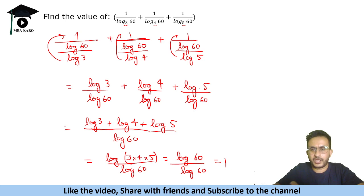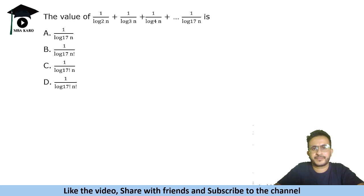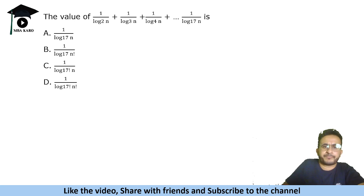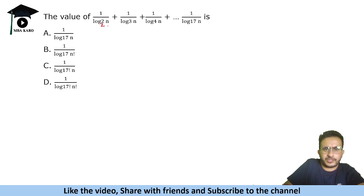So that is how you apply that property. Let us look at another example to understand it. Suppose we are given an expression with 1 over log base 2 of n, plus 1 over log base 3 of n, and so on. The denotation may not be perfectly written, but treat it as log_2(n) and log_3(n). Each term like 1 over log_2(n) can be written as 1 over (log n / log 2), which equals log 2 over log n.